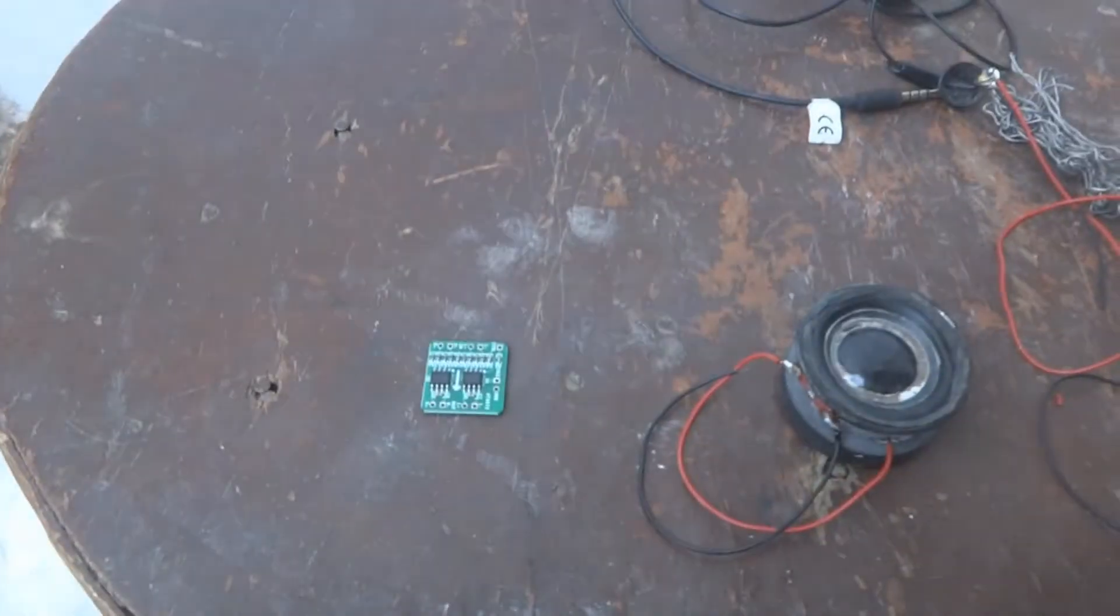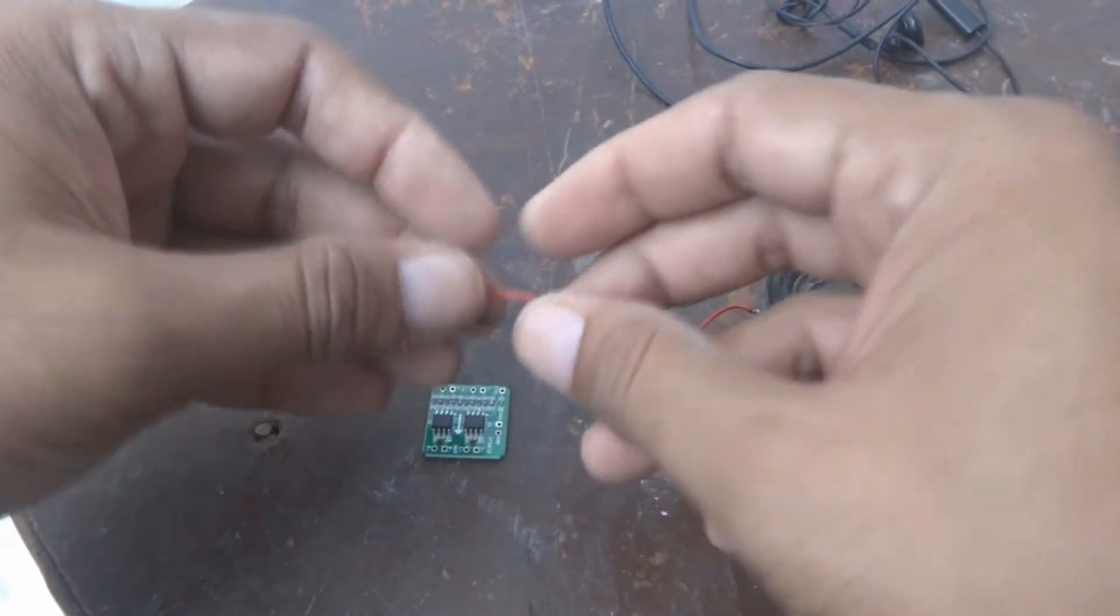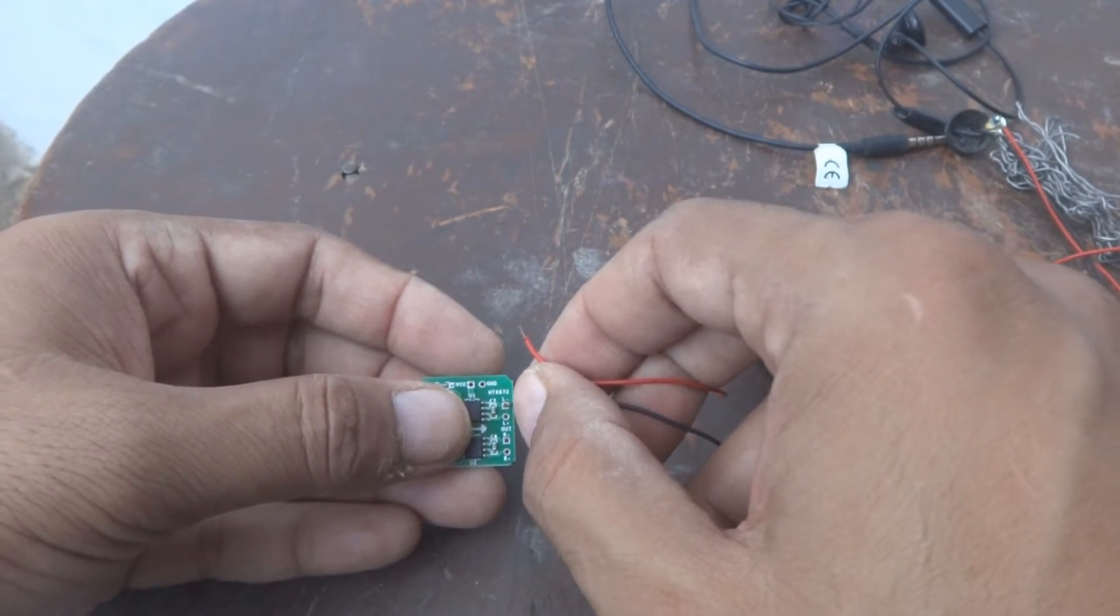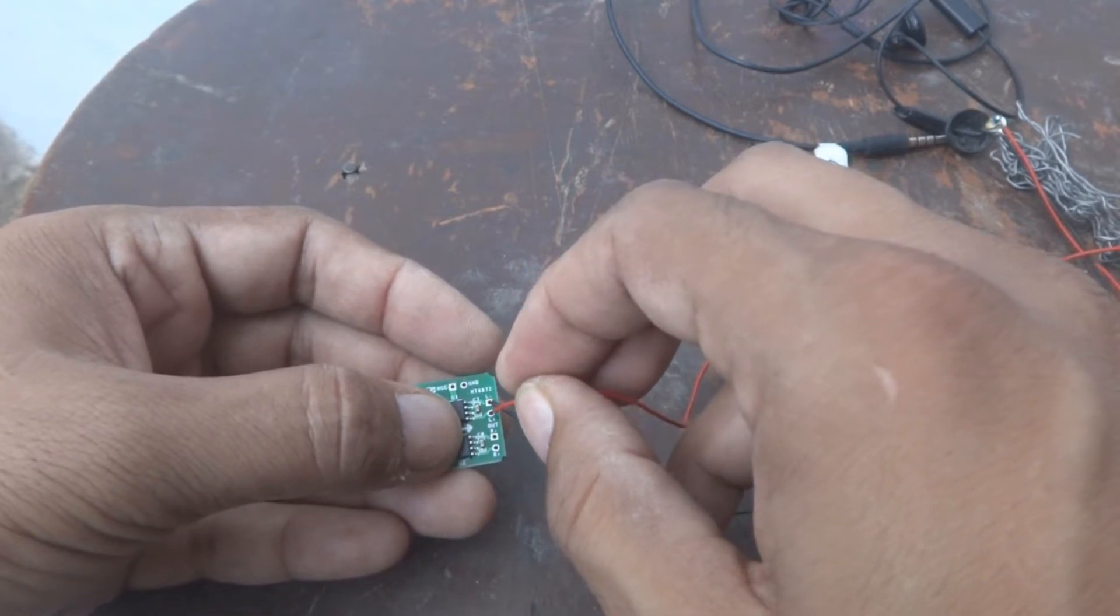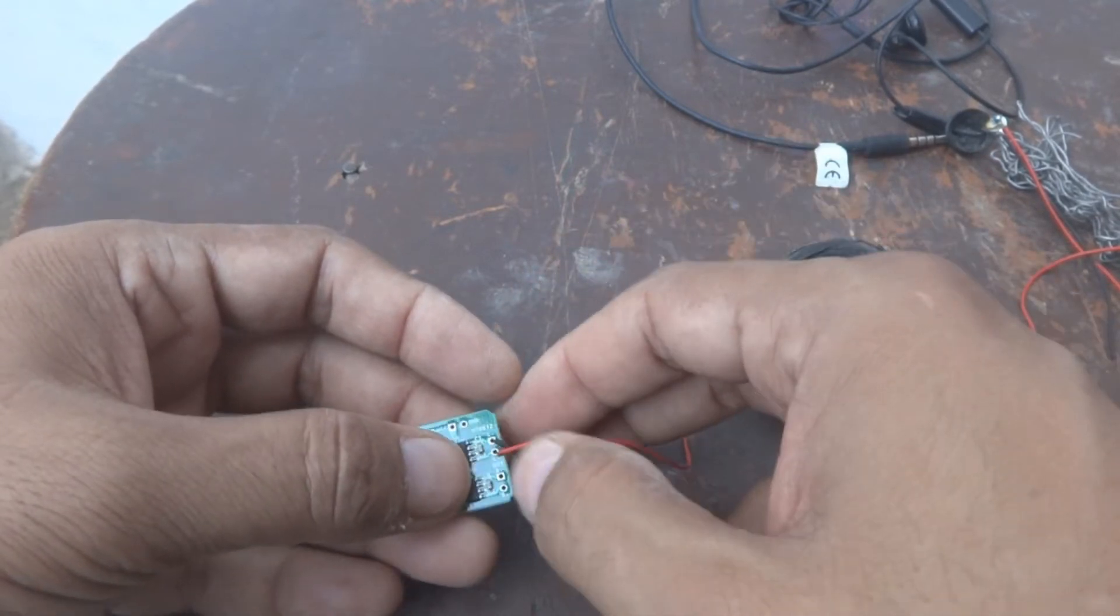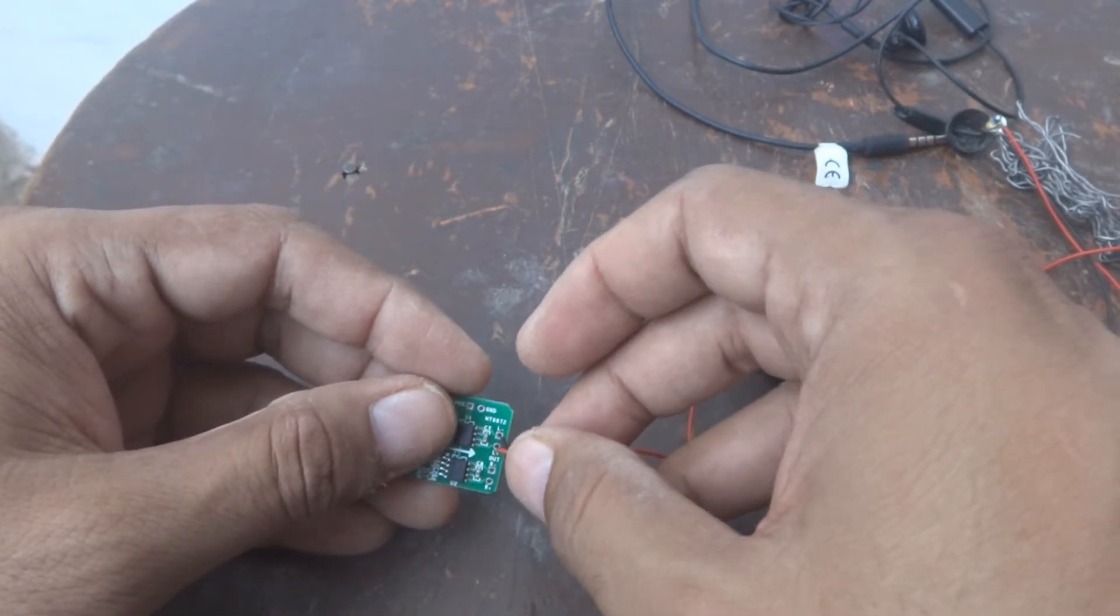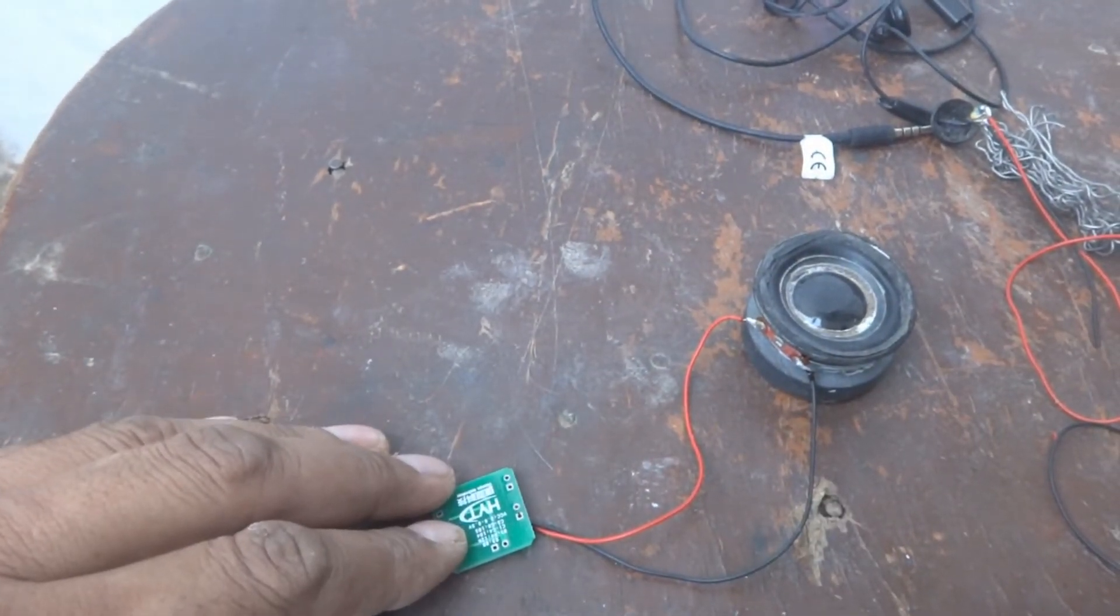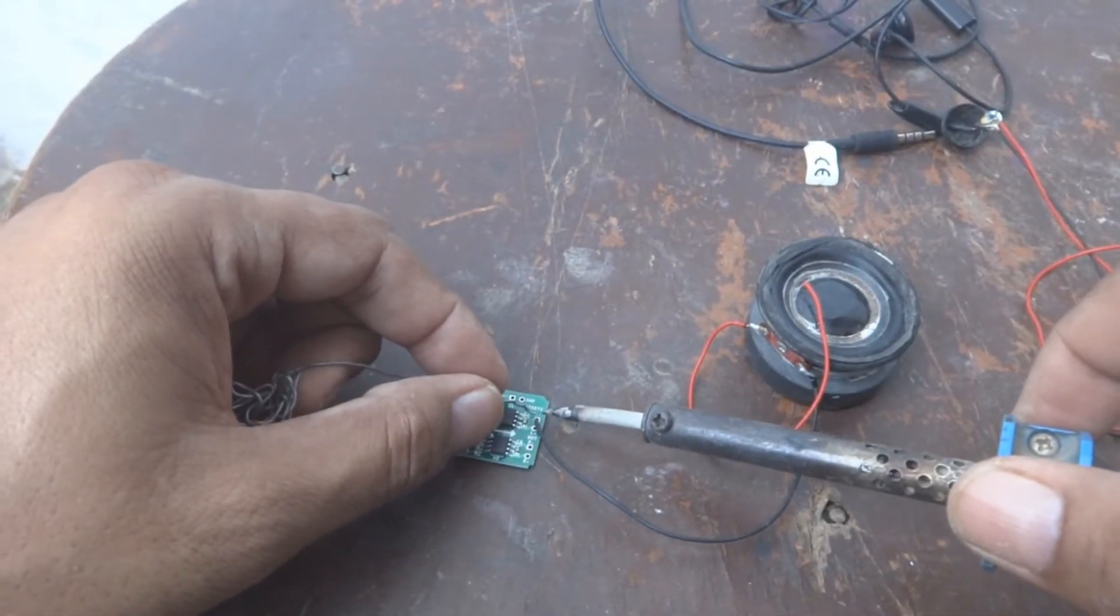Now we're going to test it. Here is the speaker for the output device. I will connect this to the output on the left side. I'm going to solder these two wires to the L channel. Very small, tiny soldering is required.